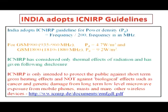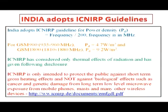The ICNIRP guidelines that India has adopted equal frequency divided by 200, where frequency is in megahertz. For GSM 900, this comes to 4.7 Watt per meter squared. For GSM 1800, taking 1840 MHz as the mid-band value, it comes to 9.2 Watt per meter squared. ICNIRP is only intended to protect the public against short-term acute heating effects, and not against biological effects such as cancer and genetic damage from long-term low-level microwave exposure.